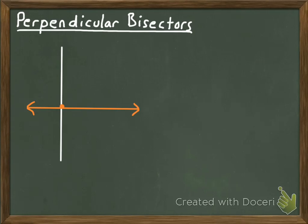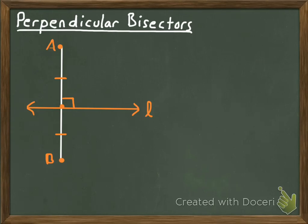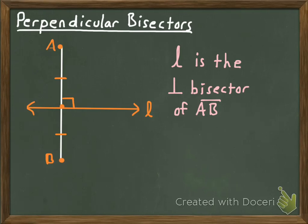If I name the original segment AB, with A there and B there, then since line L goes through the midpoint of segment AB and is perpendicular to segment AB, that makes it a perpendicular bisector.